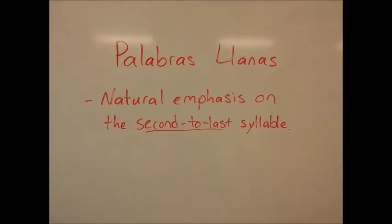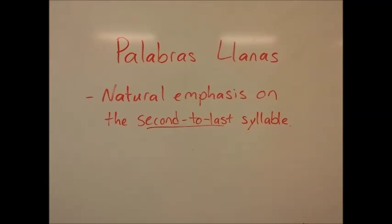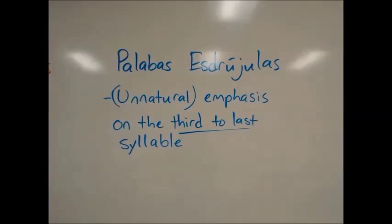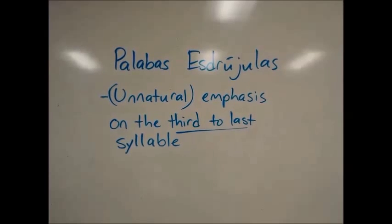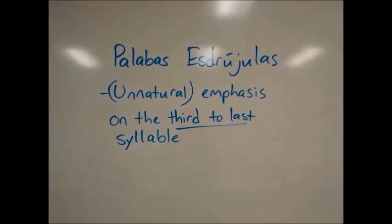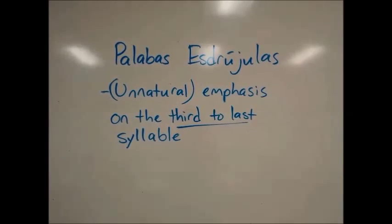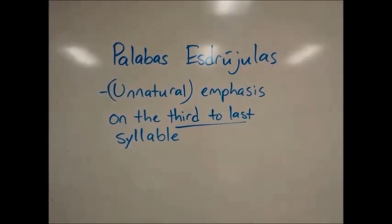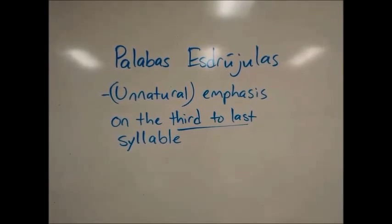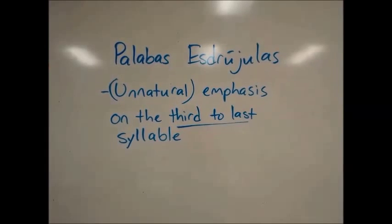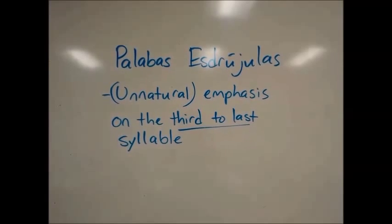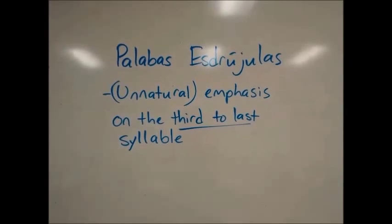The second category of words are palabras llanas. These words have a natural emphasis on the second to last syllable. The last category are palabras esdrújulas. These words have an unnatural emphasis on the third to last syllable, which means these words always have an accent mark on the third to last syllable. A helpful way to remember is that the word esdrújula itself has an accent on the third to last syllable.